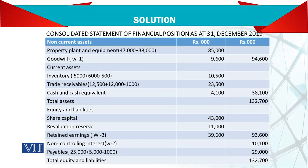For trade receivables, both are added but the inter-company amount owed by one to the other is deducted. Similarly for payables — both payables are added and then the inter-company amount is deducted. Normally we post proper adjusting entries for this. A worksheet is prepared where debit and credit entries are made against specific items, and the net figures are then carried to the balance sheet.